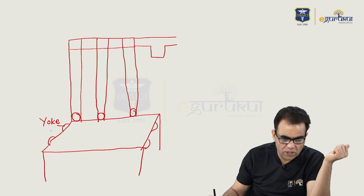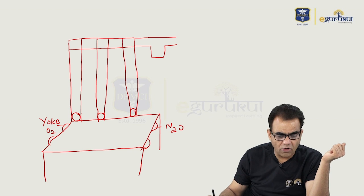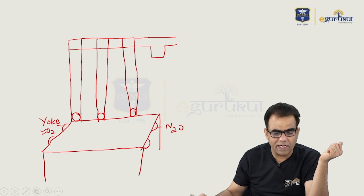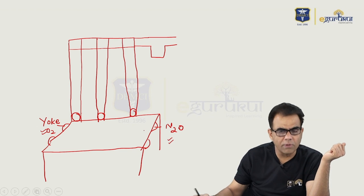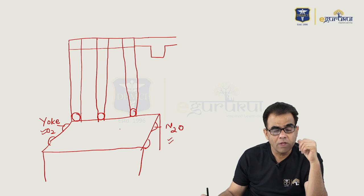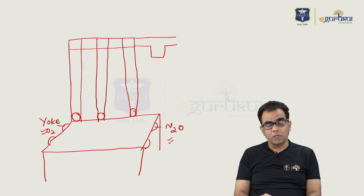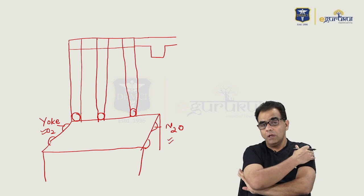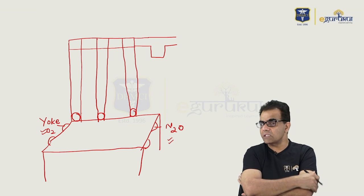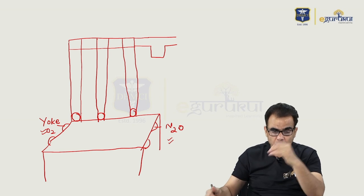This is the yoke for oxygen and this is the yoke for nitrous oxide. So obviously, the oxygen cylinder or central supply will be attached here, and the nitrous oxide central supply or cylinder will be attached here. But the pressure in cylinders or even central supply is very high — 2000 PSI can blast everything, so obviously pressure has to be reduced.